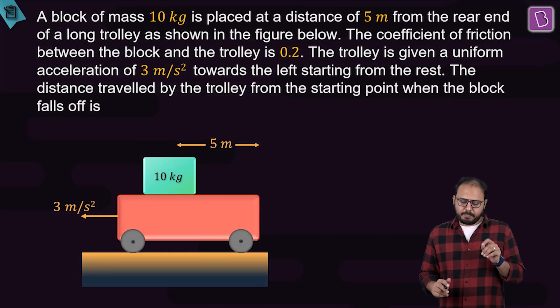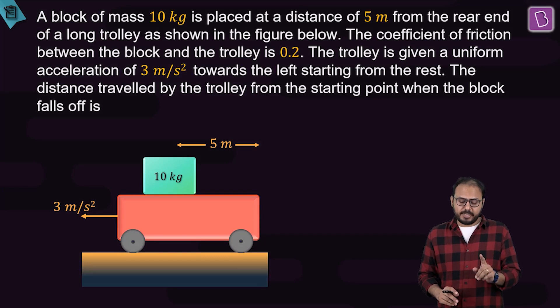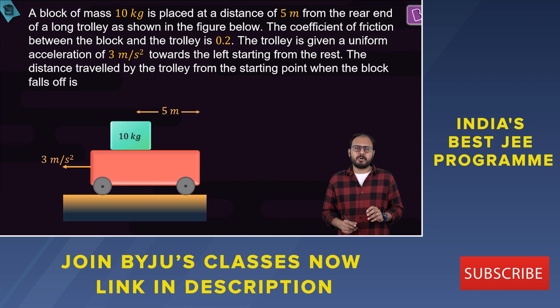Block of mass 10 kg is placed at a distance of 5 meters from the rear end of a long trolley as shown. The coefficient of friction between the block and the trolley is 0.2.